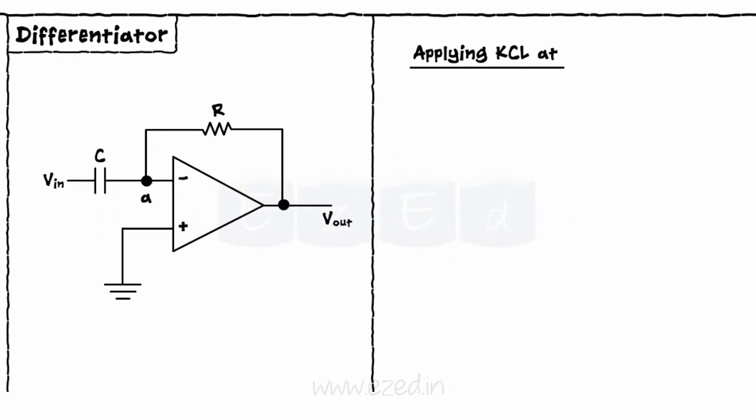Applying KCL at node A, IF equals IC. From the diagram, the current IF equals VA minus Vout upon R, and the current flowing through a capacitor is C into dVC by dT.